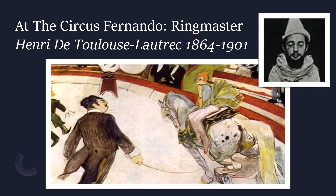At the Circus Fernando: Ringmaster by Henri de Toulouse-Lautrec, 1864 to 1901. This is an oil on canvas painting that depicts a woman riding a pale horse under the watchful eye of the ringmaster. Lautrec lived in Paris and was a frequent visitor at the circus, creating many pencil drawings of the entertaining scenes that unfolded before him. Notice the dominant stance of the ringmaster as he commands the direction of the horse. Notice the clothes that both the ringmaster and the horseback rider are wearing — their appearance is reflective of the time period and circus performance attire.